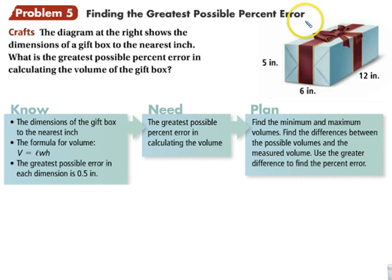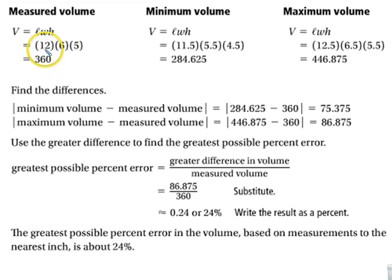Finding the greatest possible percent error. So we have this box and the dimensions to the nearest inch. So that tells us a lot. If it's the nearest inch, then that means that we can have the greatest possible error of 0.5 inches. So what we need to do is we need to assume what happens if we've got 0.5 less than each one of these, 0.5 more, and if it were originally the way that it is. So here's the measure. 12 by 6 by 5, that's 360. If we subtract each one by 0.5, this would be our minimum volume. And if we added each one of those numbers right here by 0.5, we would get our maximum.